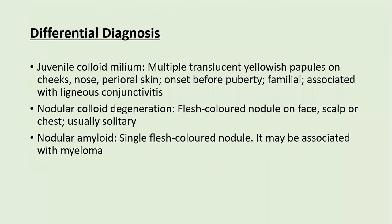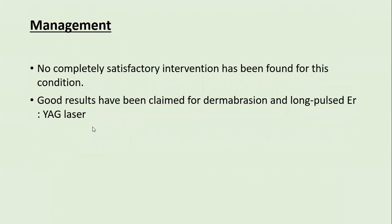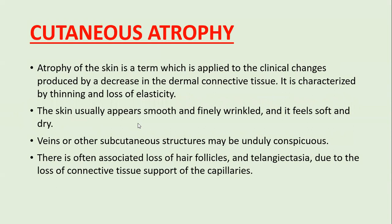Differential diagnosis includes juvenile colloid milium with multiple translucent yellow papules on the cheek, nose, and perioral skin with onset before puberty, familial association, and ligneous conjunctivitis. Nodular colloid degeneration presents as flesh-colored nodules on the face, scalp, and chest, usually solitary. Nodular amyloid may be associated with a single flesh-colored nodule and myeloma. Management has no completely satisfactory intervention; good results are claimed with dermabrasion, long-pulse Nd:YAG laser, fractional CO2 lasers, and multiple chemical peels with strong acids.